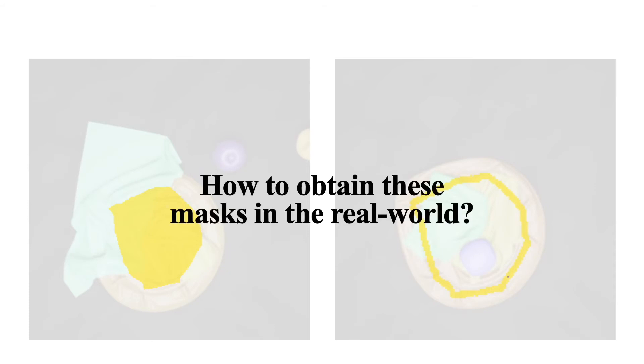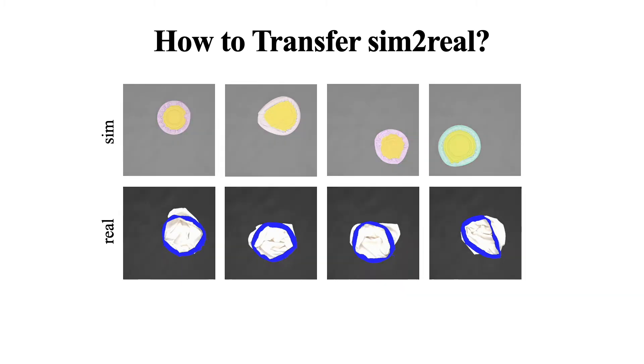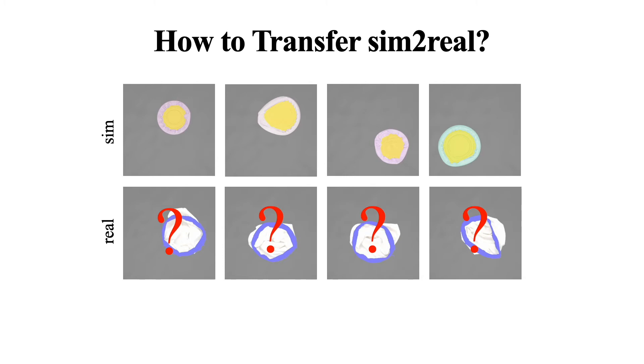Clearly, a reliable bag opening detection is critical to the success of our approach. But how can we obtain these masks in the real world? Or more specifically, how can we transfer a simulation trained policy to the real world? Since we already have the ground truth bag opening in simulation, one potential solution is to train a segmentation model using the simulation bag mask. However, due to significant visual differences between the real world and the simulated bag, an algorithm trained in simulation would face difficulty generalizing to real world images. Meanwhile, training a segmentation model in the real world requires pixel-wise bag opening annotations which are expensive to obtain.